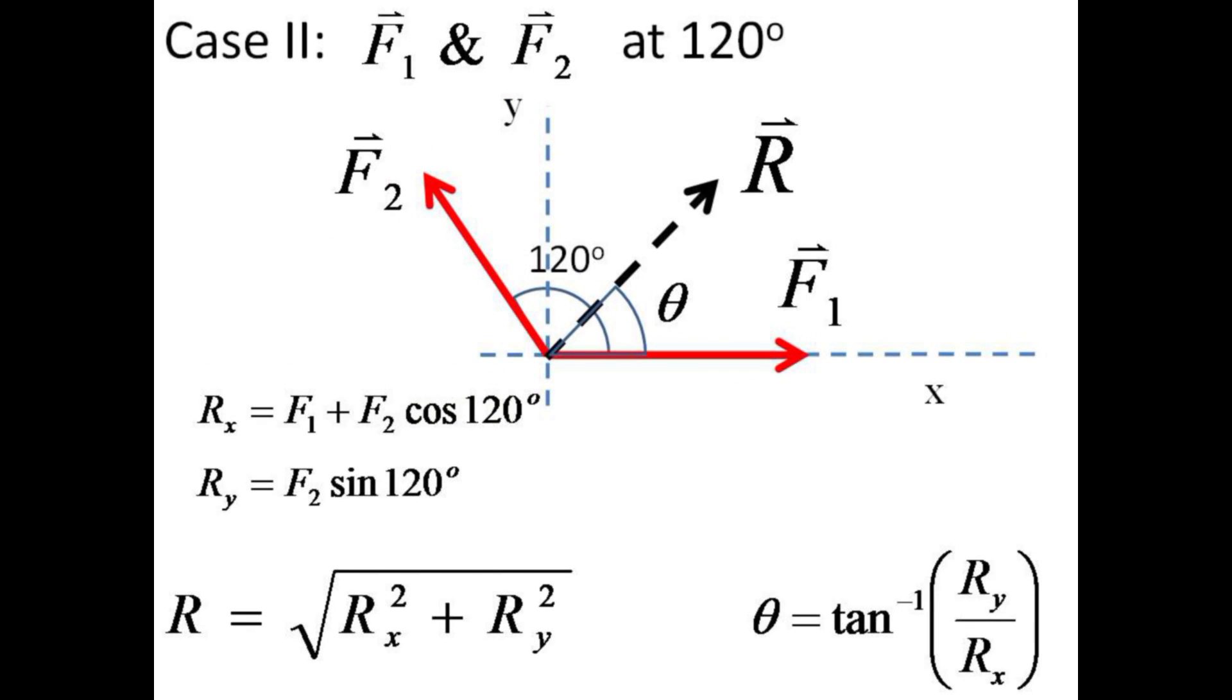Let's now rearrange the two forces so that they are 120 degrees apart. The x component of R is F1 plus F2 cosine 120 degrees, and the y component is F2 sine 120. Use the Pythagorean theorem again to predict the magnitude of R, and the inverse tangent to predict the angle for R.